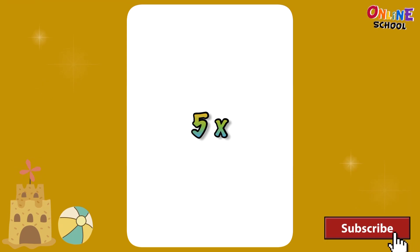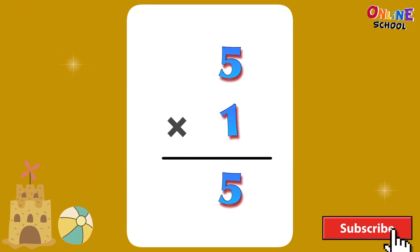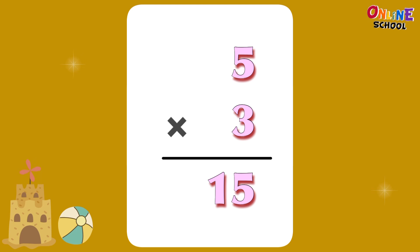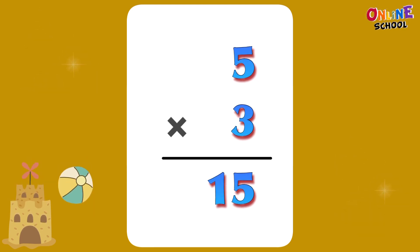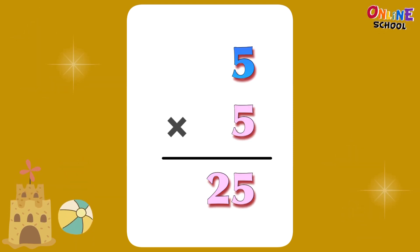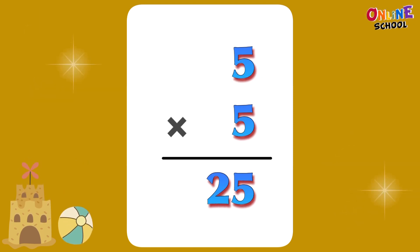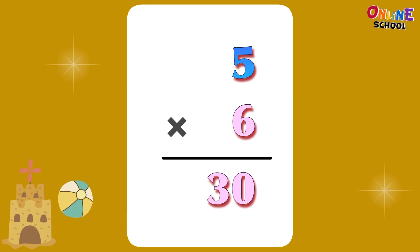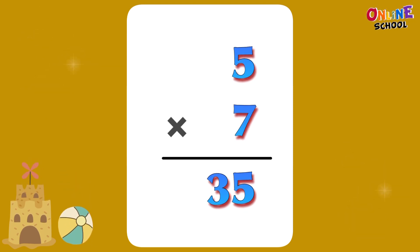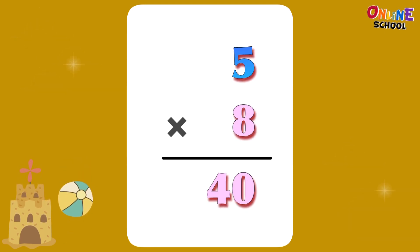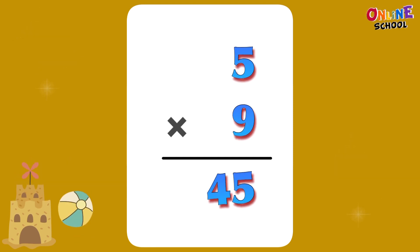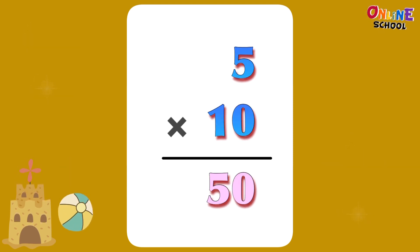5 times 1 equals 5. 5 times 2 equals 10. 5 times 3 equals 15. 5 times 4 equals 20. 5 times 5 equals 25. 5 times 6 equals 30. 5 times 7 equals 35. 5 times 8 equals 40. 5 times 9 equals 45. 5 times 10 equals 50.